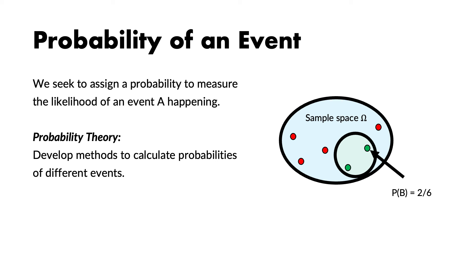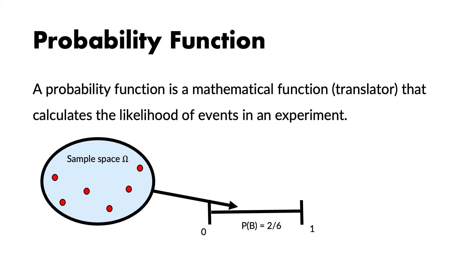The last concept of a probability system to discuss is probability itself. A probability is always associated with an event — it is essentially the likelihood that the event might happen in the future. Probability theory tries to come up with methods to calculate the probabilities of different events. The probability function is the mathematical function that maps events to probabilities, calculating the likelihood on a scale from 0 to 1 in the context of a random experiment.